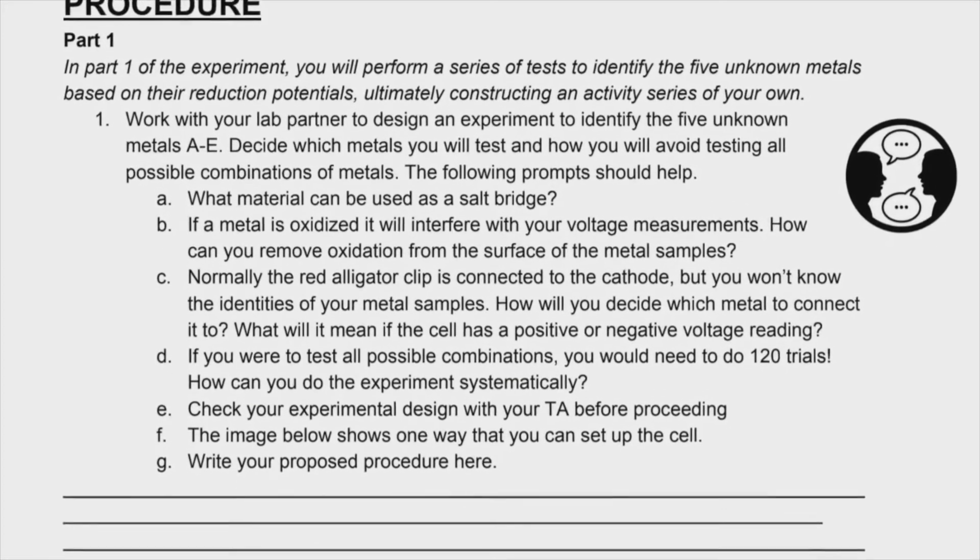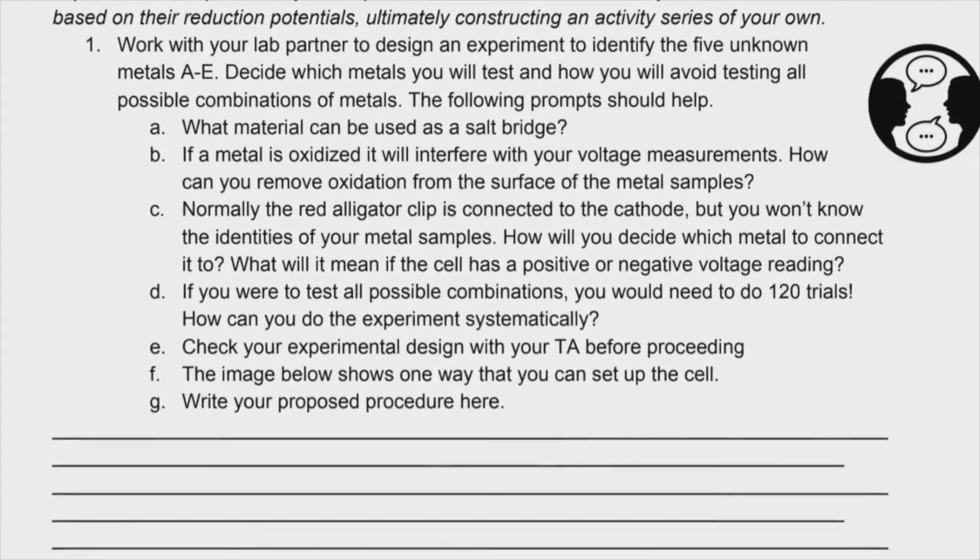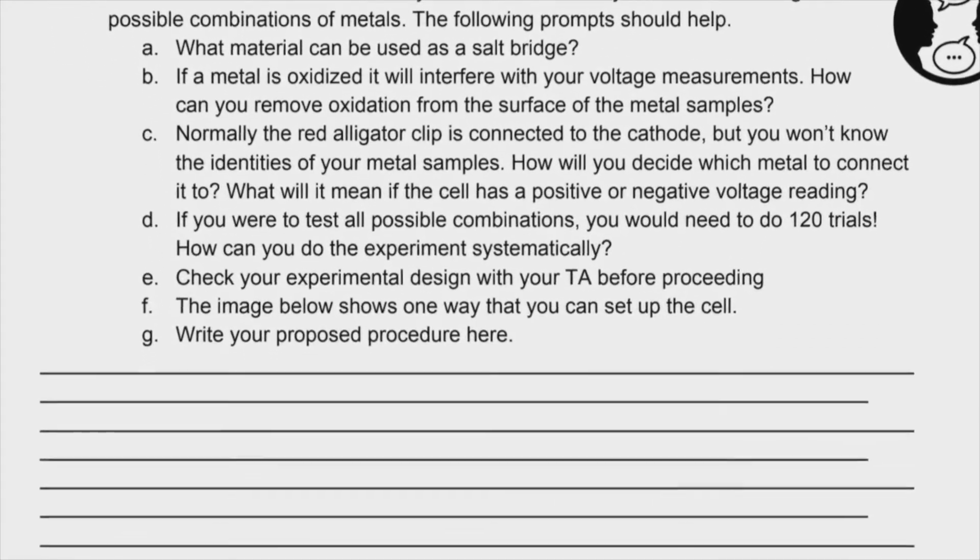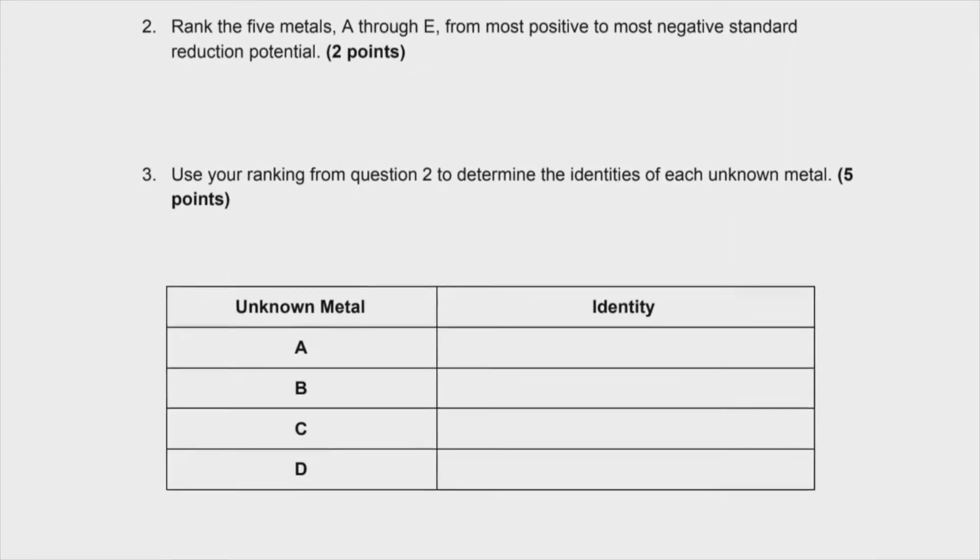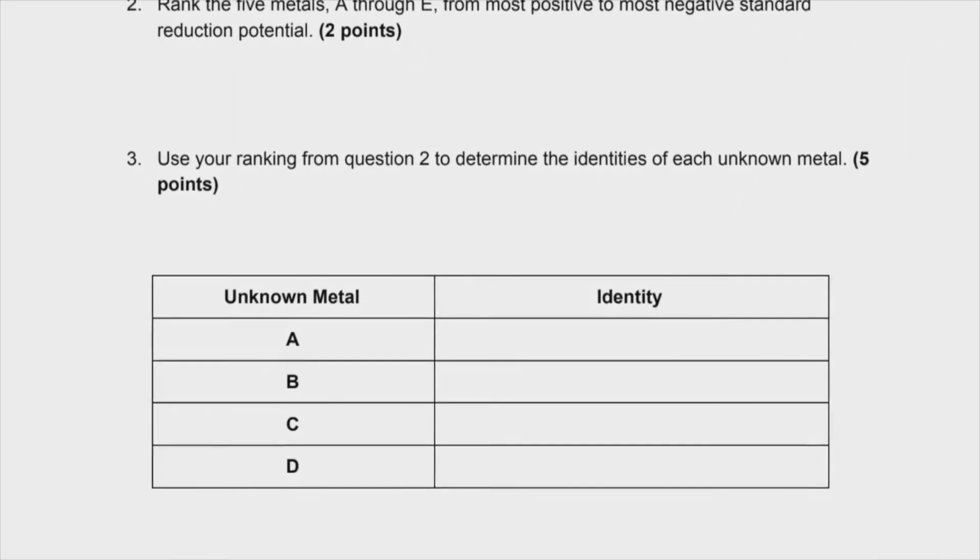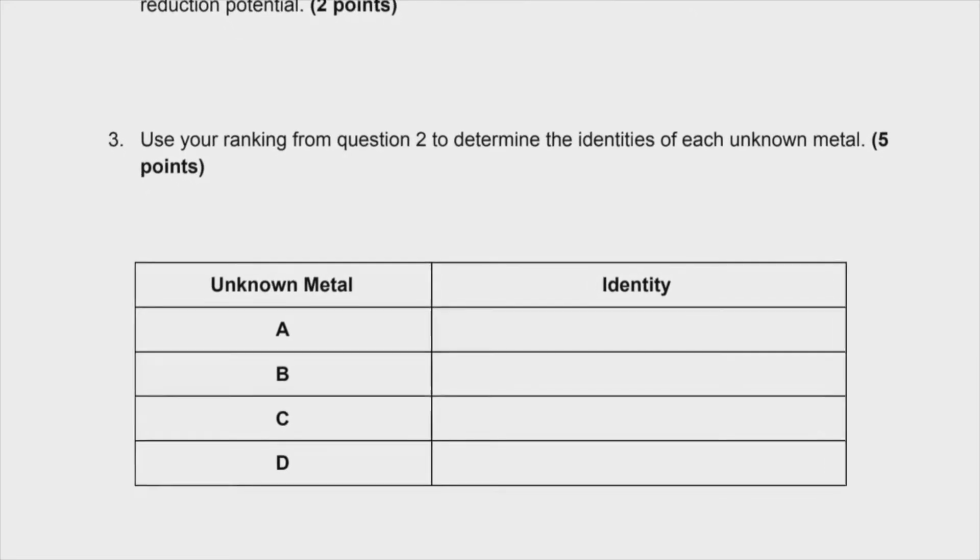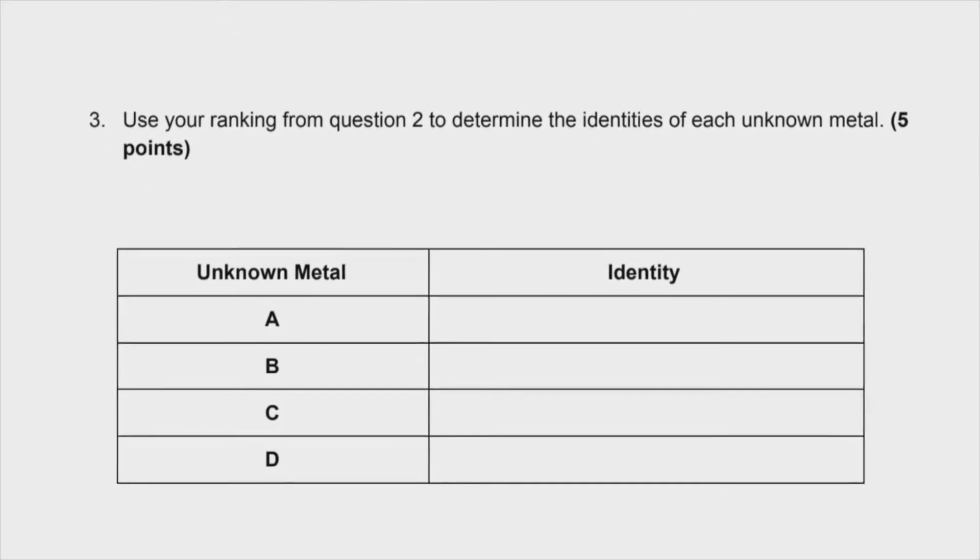You'll need to work with your lab partner to create a plan to identify your five unknown solutions without having to test every possible combination of metals. You'll use your data from part one to solve for the unknown solutions. Once you've identified the solutions, you can move on to part two.